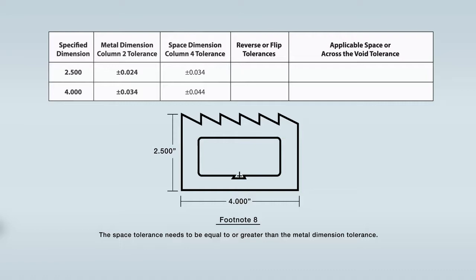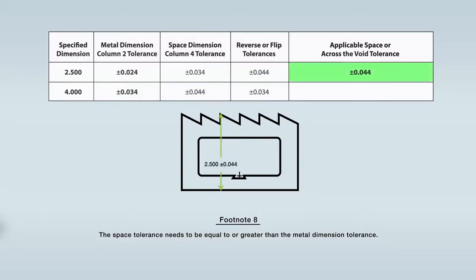The depth and width space dimension tolerances will need to be reversed or flipped, because the space dimension tolerance for the 2.5 inch specified dimension applies over the larger 4 inch width, compared to the tolerance for the 4 inch specified dimension which applies over the smaller 2.5 inch depth. This is similar to the previous example with the rectangular tube. After reversing the tolerances, the 2.5 inch specified dimension will have a space dimension tolerance across the void of plus or minus 0.044 inches, and the 4 inch dimension will have a space dimension tolerance of plus or minus 0.034 inches. In all cases, a space dimension tolerance needs to be equal to or greater than the metal dimension tolerance.